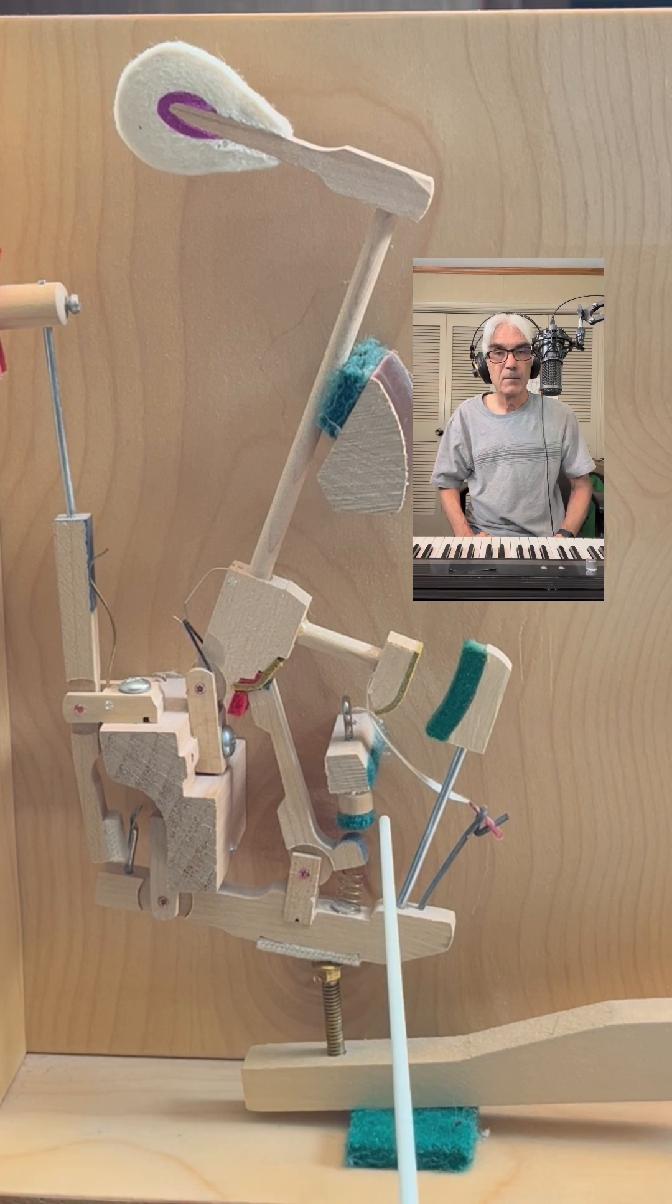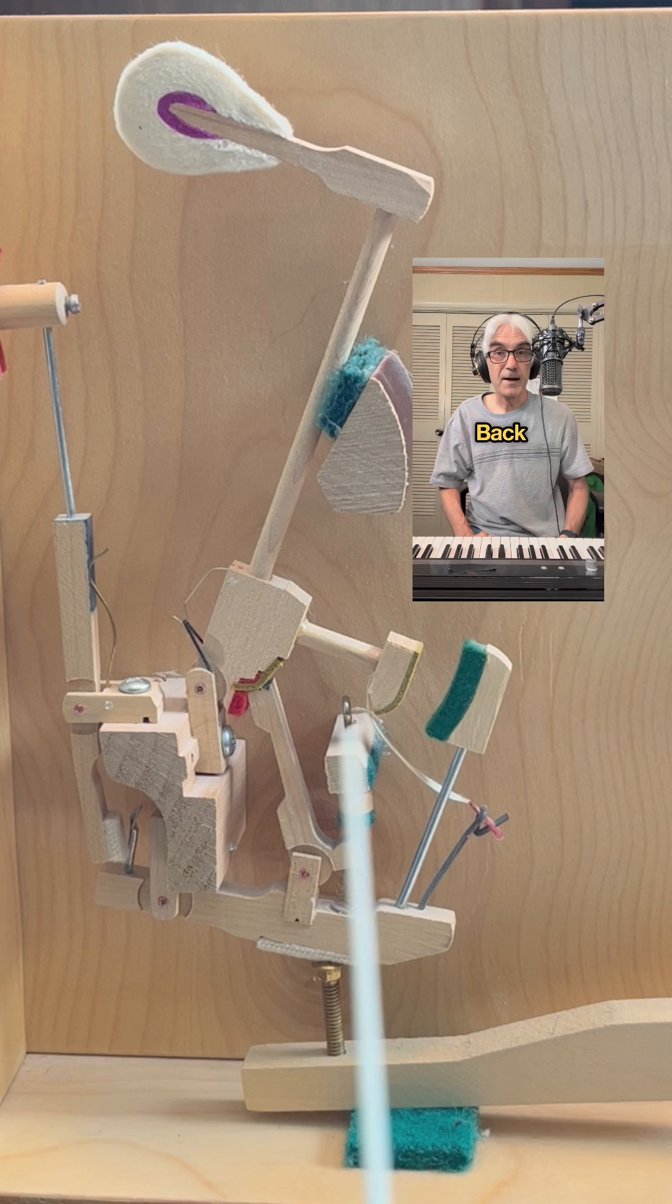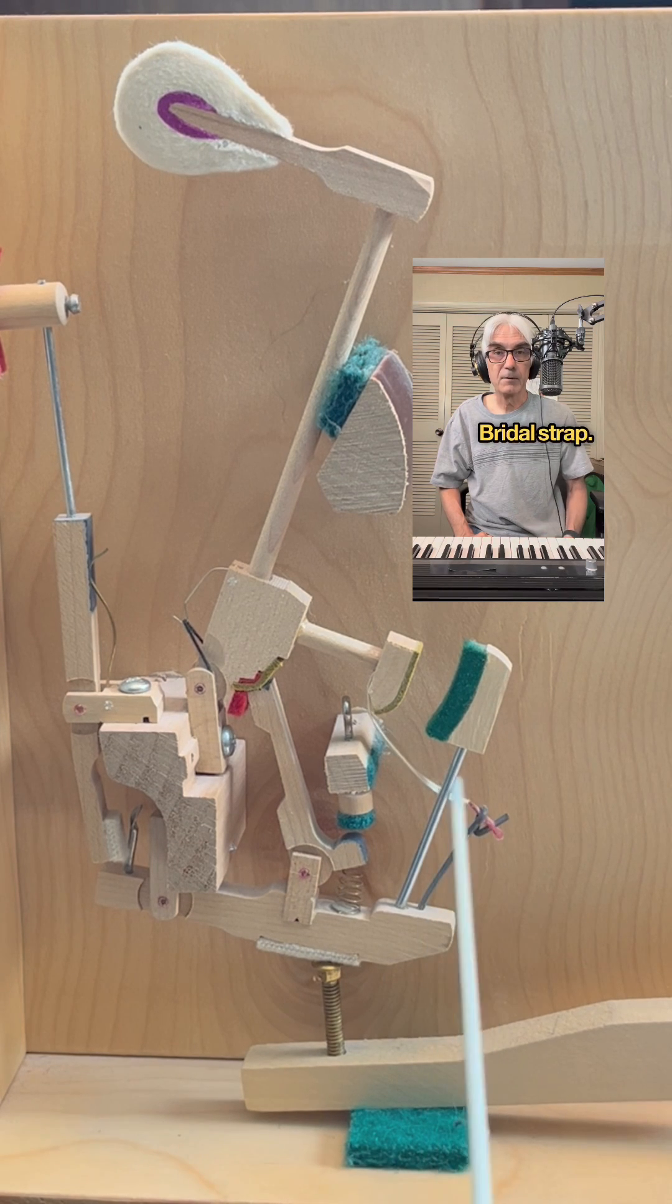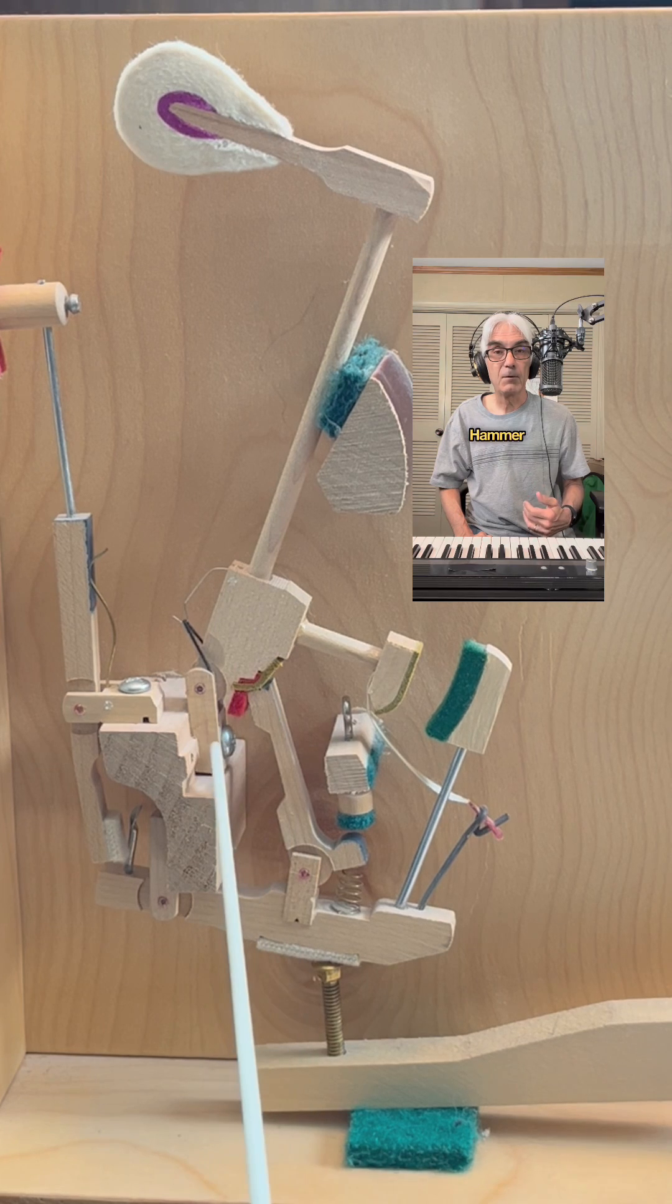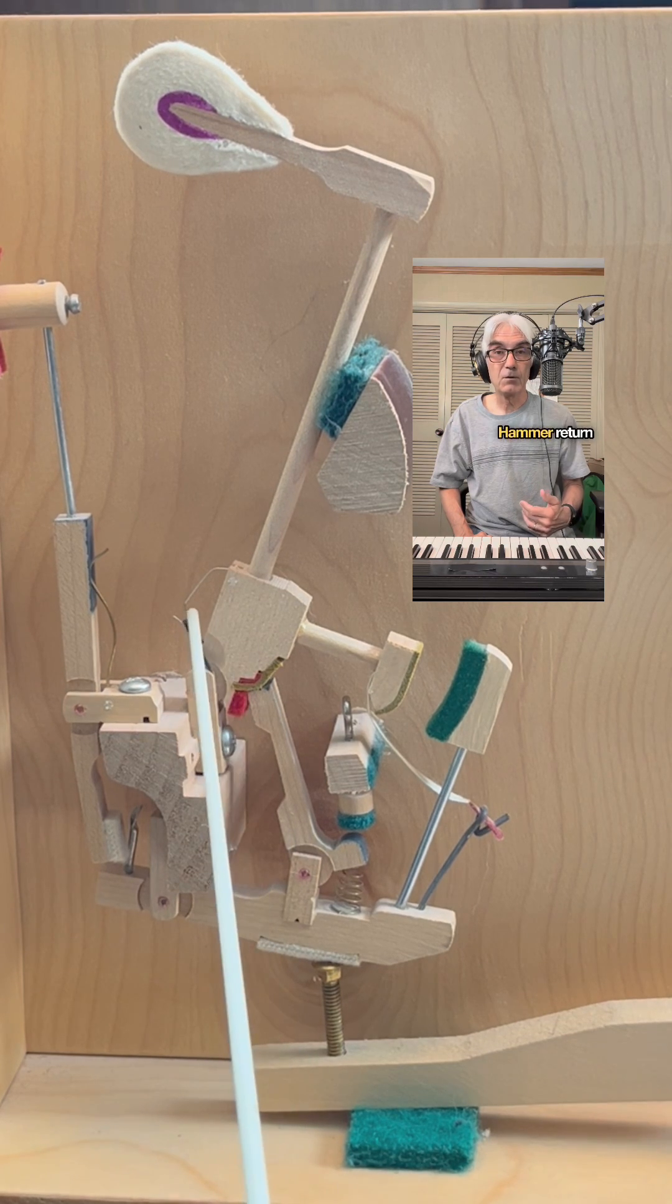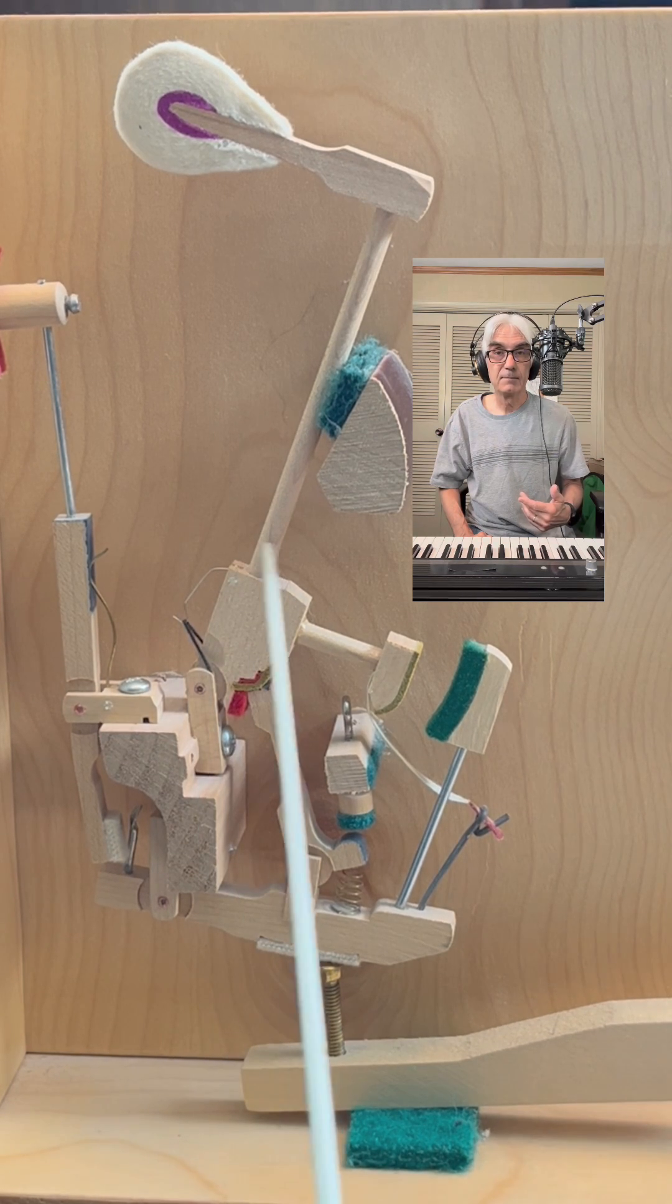Let off rail. Let off button. Back check. Bridal strap. Bridal wire. Hammer butt. Hammer flange. Hammer return spring. Hammer shank. Hammer.